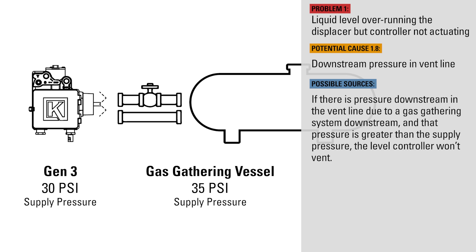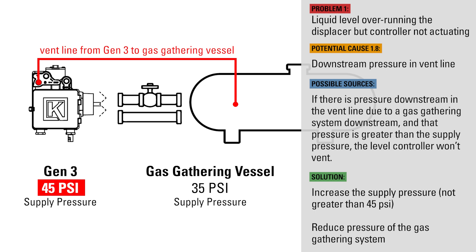If there's pressure downstream in the vent line due to a gas gathering system downstream, and that pressure is greater than the supply pressure, the level controller won't vent. Increase the supply pressure but no more than 45 psi, or reduce the downstream pressure of the gas gathering system.